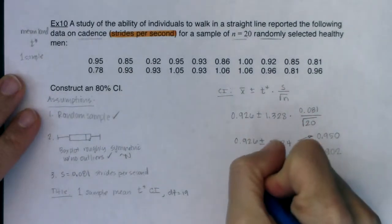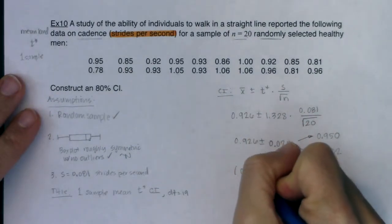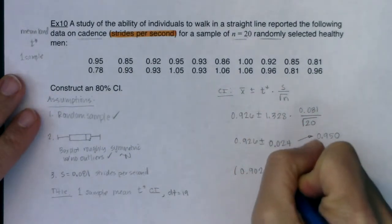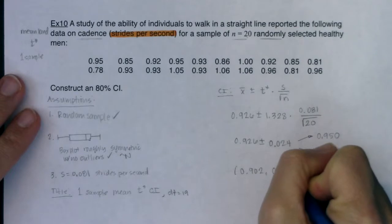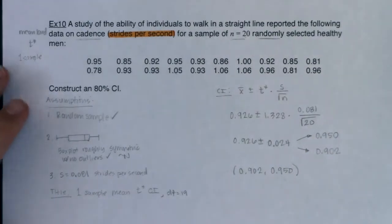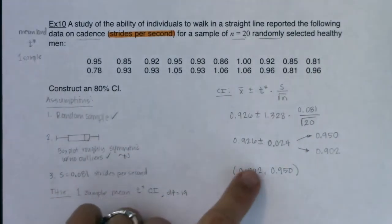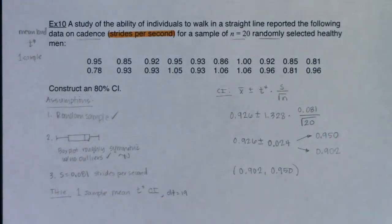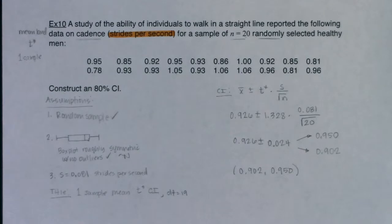I always write the interval low to high: (0.902, 0.950). That's where we think the parameter — the mean cadence — actually is. I'll pause, show how to crunch this on the calculator, then come back to interpret it and draw a graph.